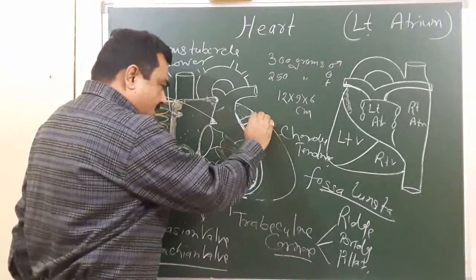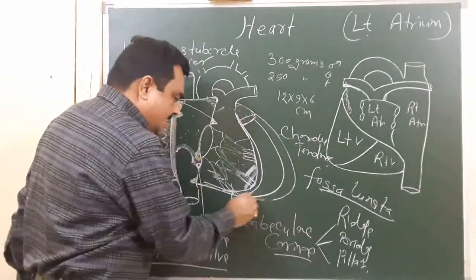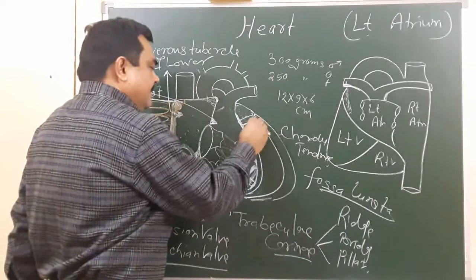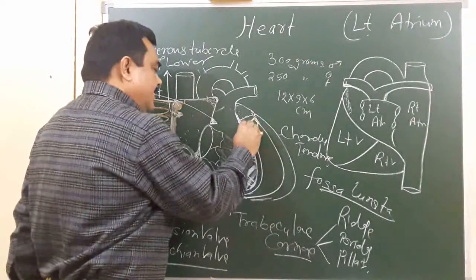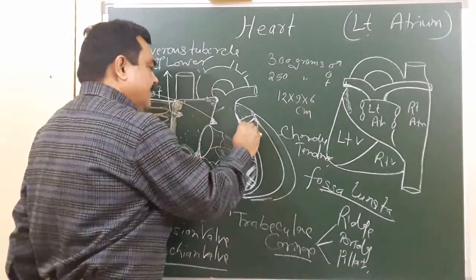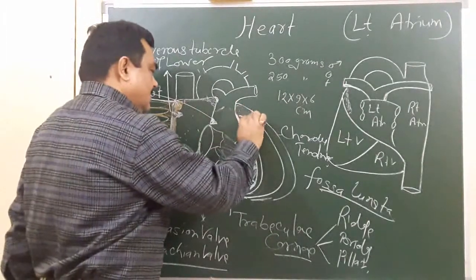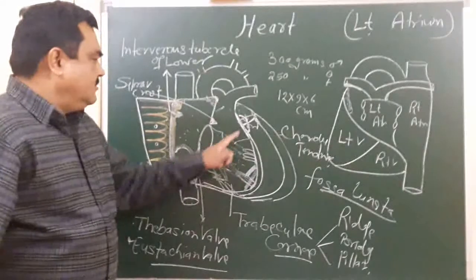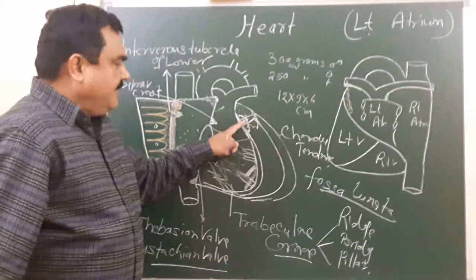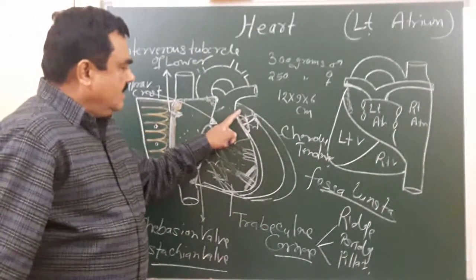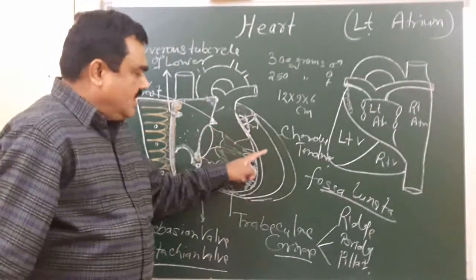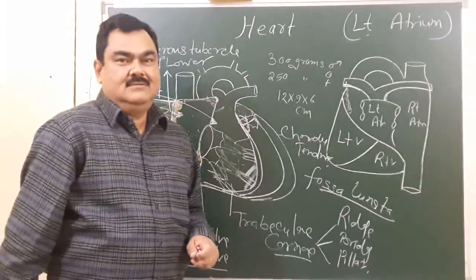If you cut this wall, then you will find this - this is the mitral valve. You have the bicuspid valve. So this is the opening through which the left atrium opens into the left ventricle. Thank you.